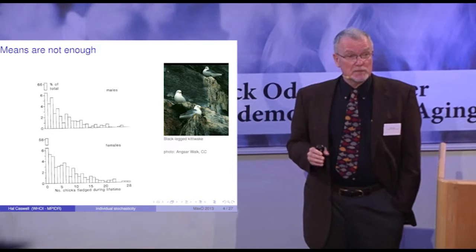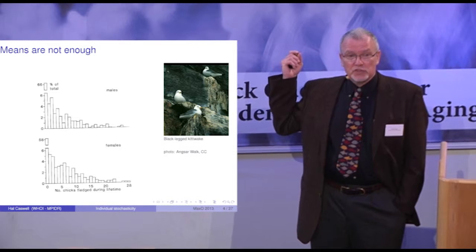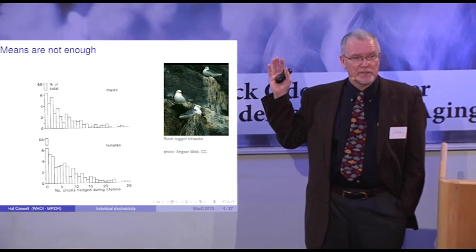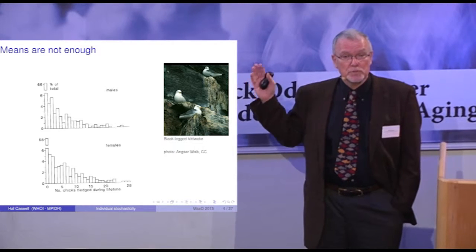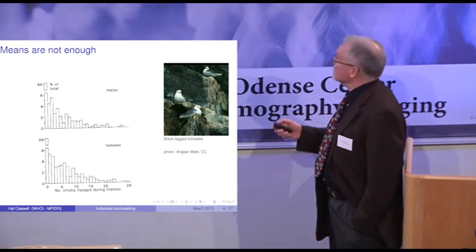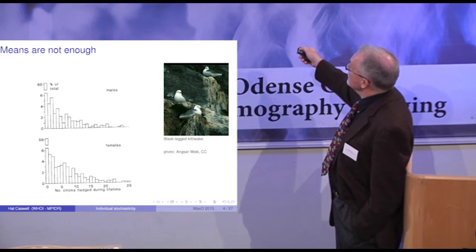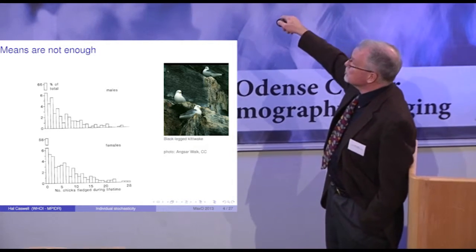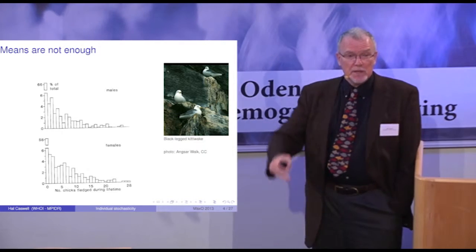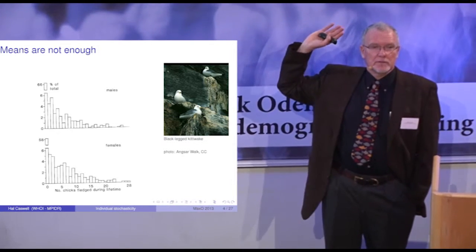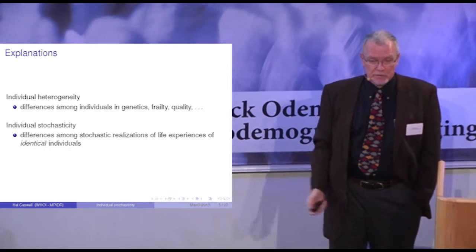But means are not enough. This picture is so familiar to population biologists that nobody is even surprised to see it. This is the distribution of lifetime reproduction in a population of kittiwakes — a seabird in the North Atlantic. Although there's some average, there's a huge amount of variation. There are a few individuals that produce over their lifetime 20 to 30 surviving offspring, and a very large percentage that produce no offspring at all, with a big range in between — a positive skew, a long tail of individuals that do much better than anybody else.